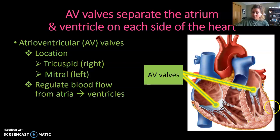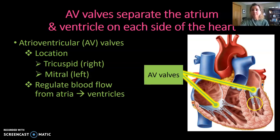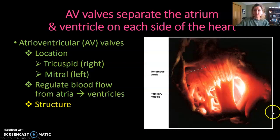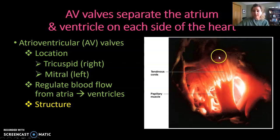The left AV valve is known as the bicuspid valve, made up of two cusps, with a structure similar to the tricuspid valve. It also has a third name: the mitral valve. In a picture of one of the AV valves, you can see the flap of endocardium that makes up the valve proper at the top, the chordae tendineae below it, and the papillary muscle it attaches to at the bottom.